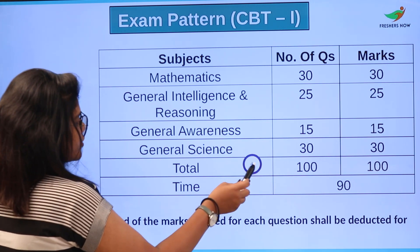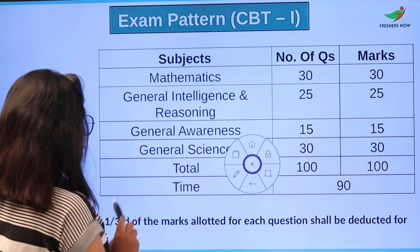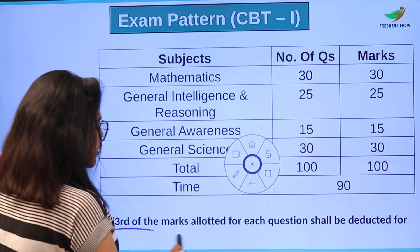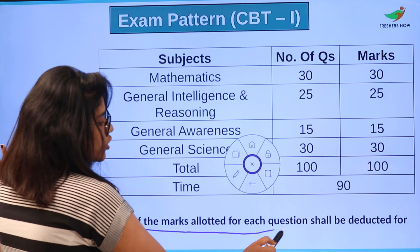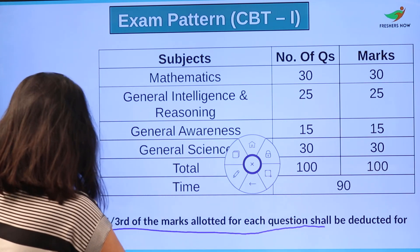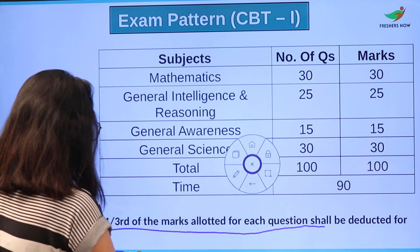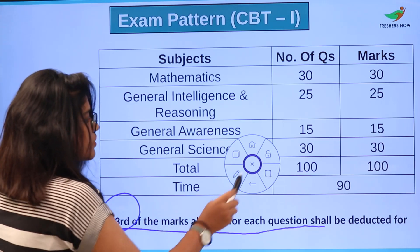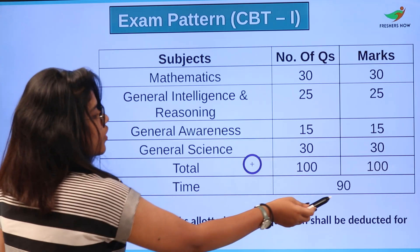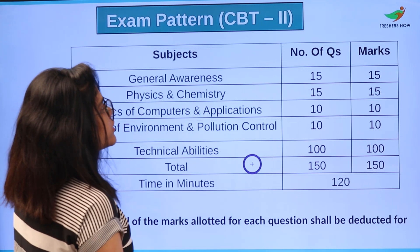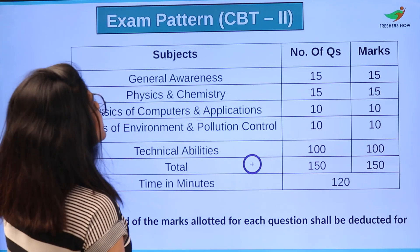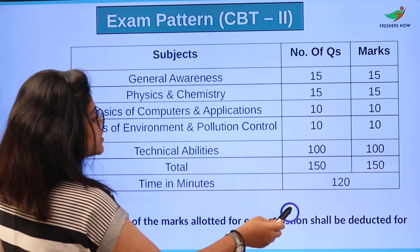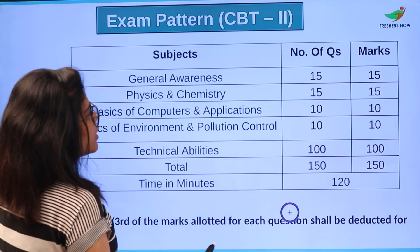Please take note that there is negative marking. For each wrong answer, one-third of the marks will be deducted. So one-third of the marks for every wrong answer will be deducted. Now let us look at the examination pattern for CBT Stage 2.